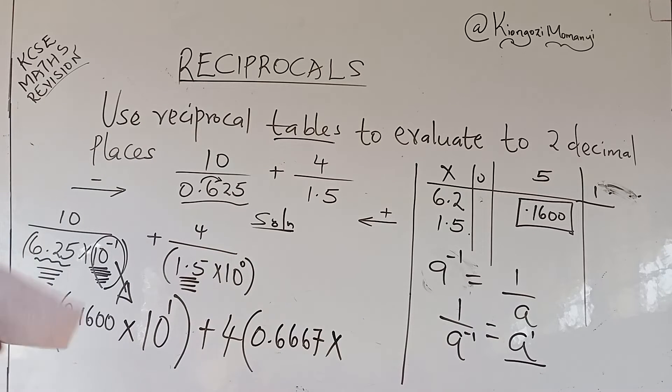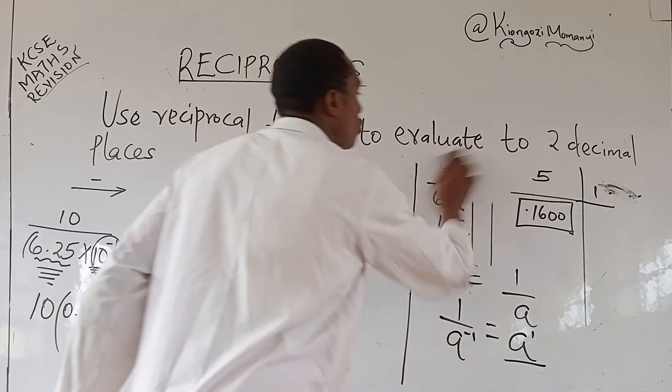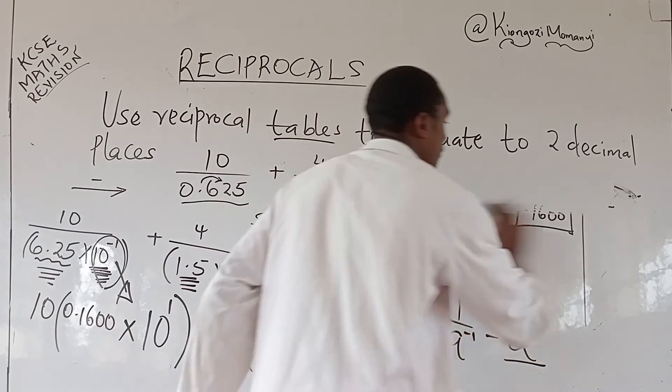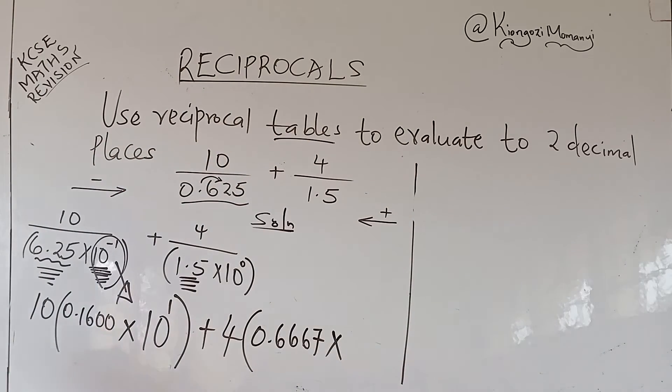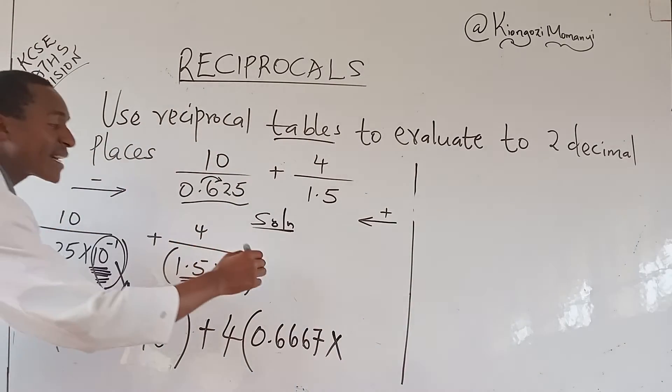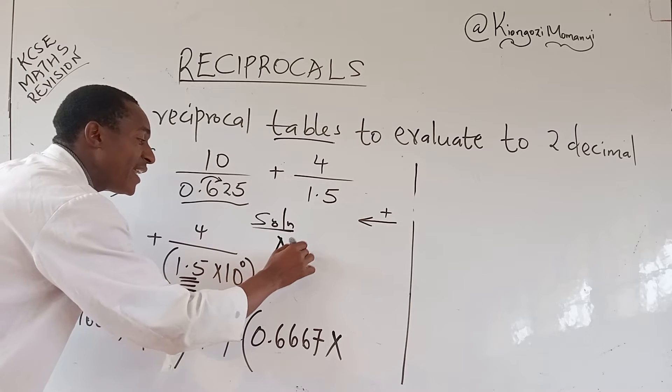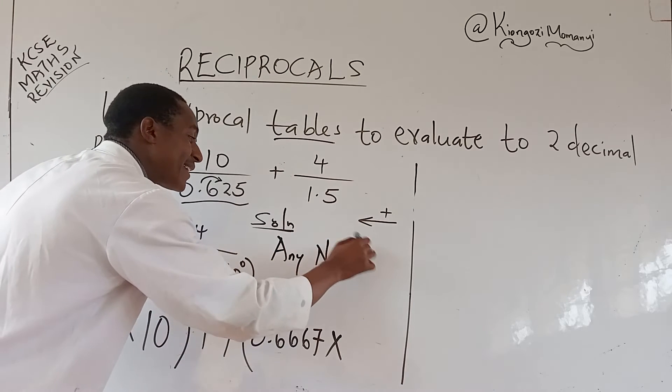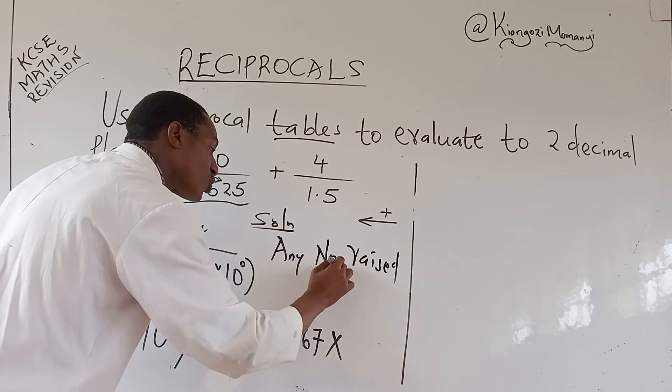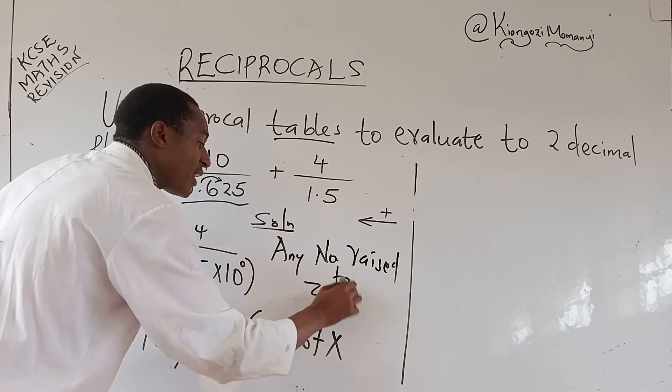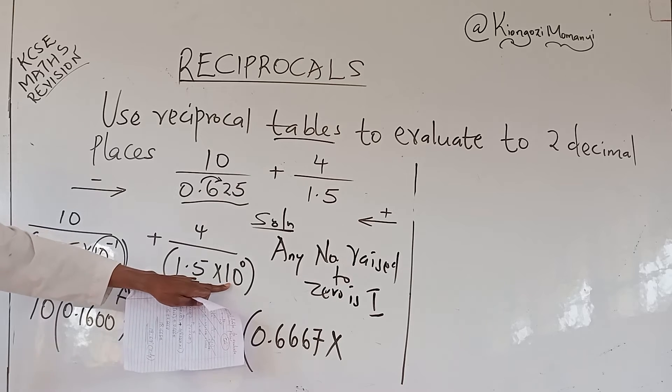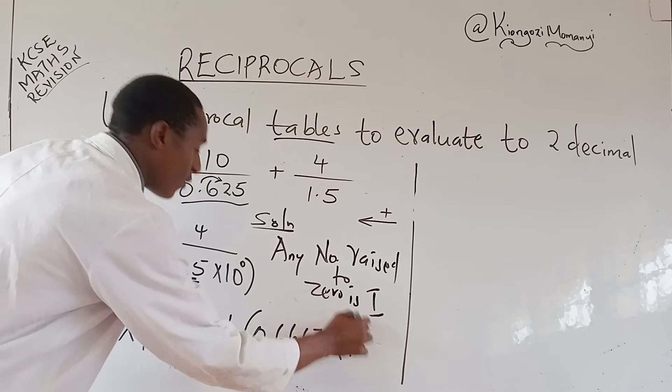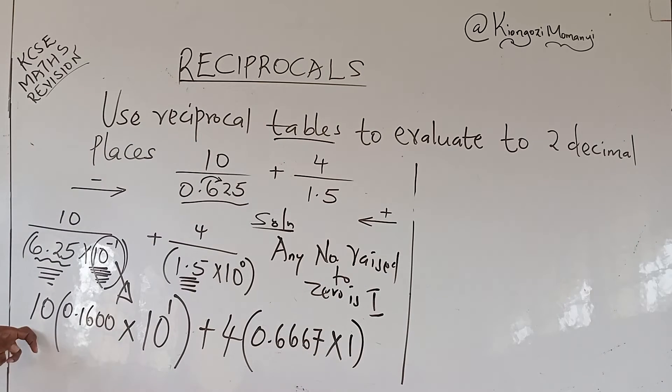Then times the reciprocal of 10 raised to power 0. The reciprocal of 10 raised to power 0. 10 raised to power 0, the concept of any number raised to 0, any number raised to 0 is 1. So it means this is 1. The reciprocal of 1 is again 1.